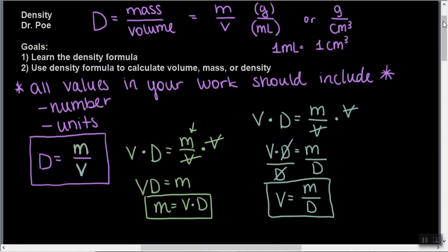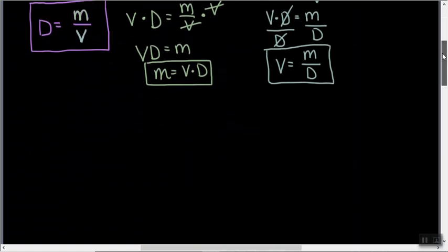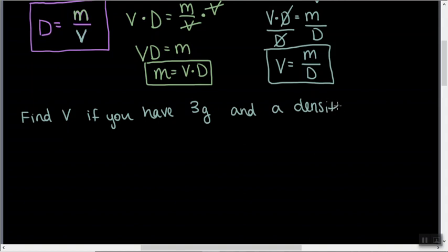Okay, so now let's use this to solve a problem. And so we're only going to have to use one of these formulas at a time. So let's find the volume of a solution if you have 3 grams and a density of 1 gram per milliliter. Okay, so pause the video and figure out which formula you would need to solve this, and then come back.